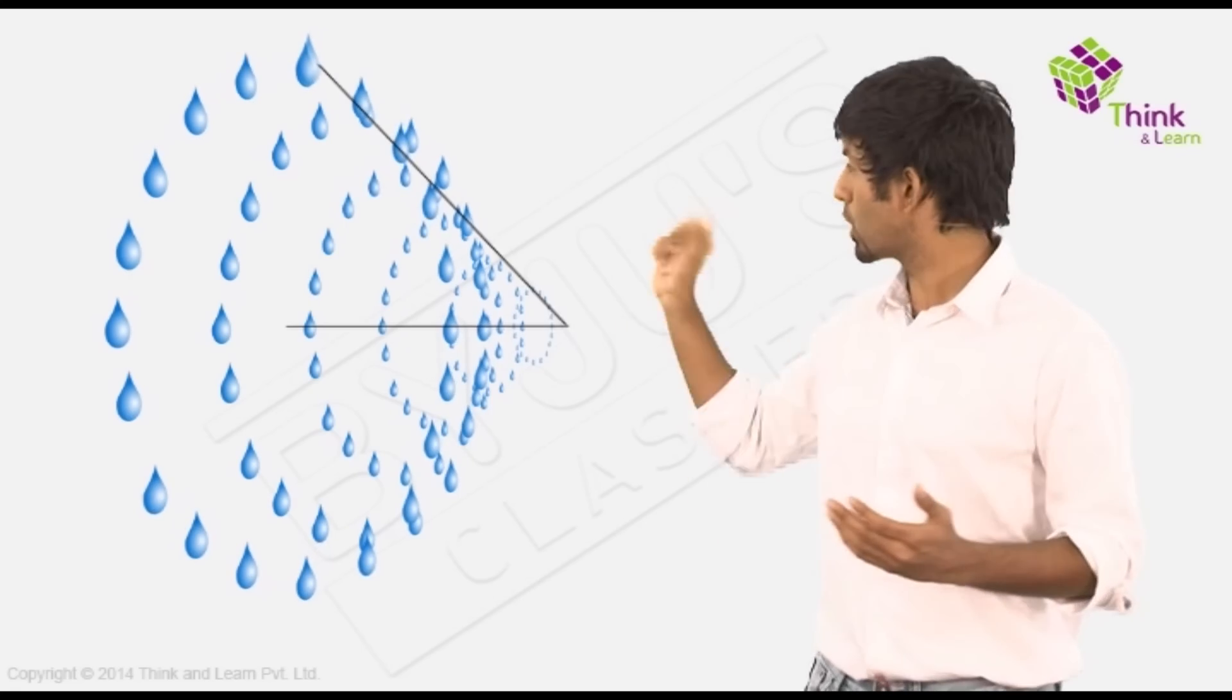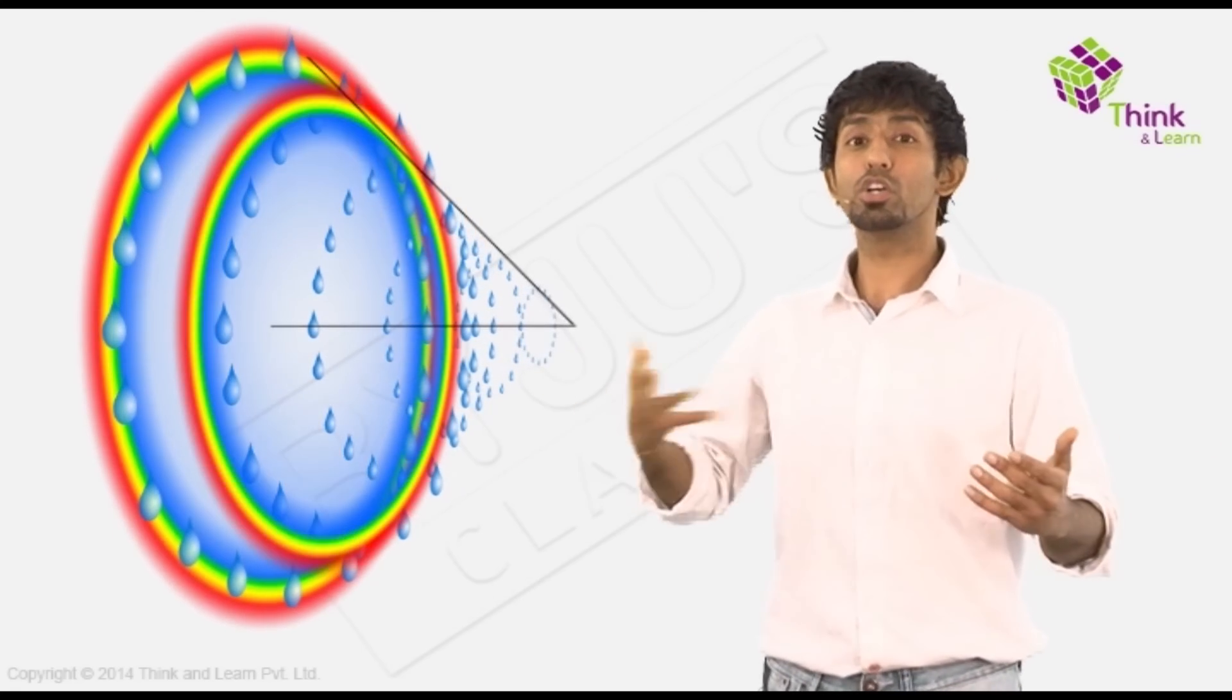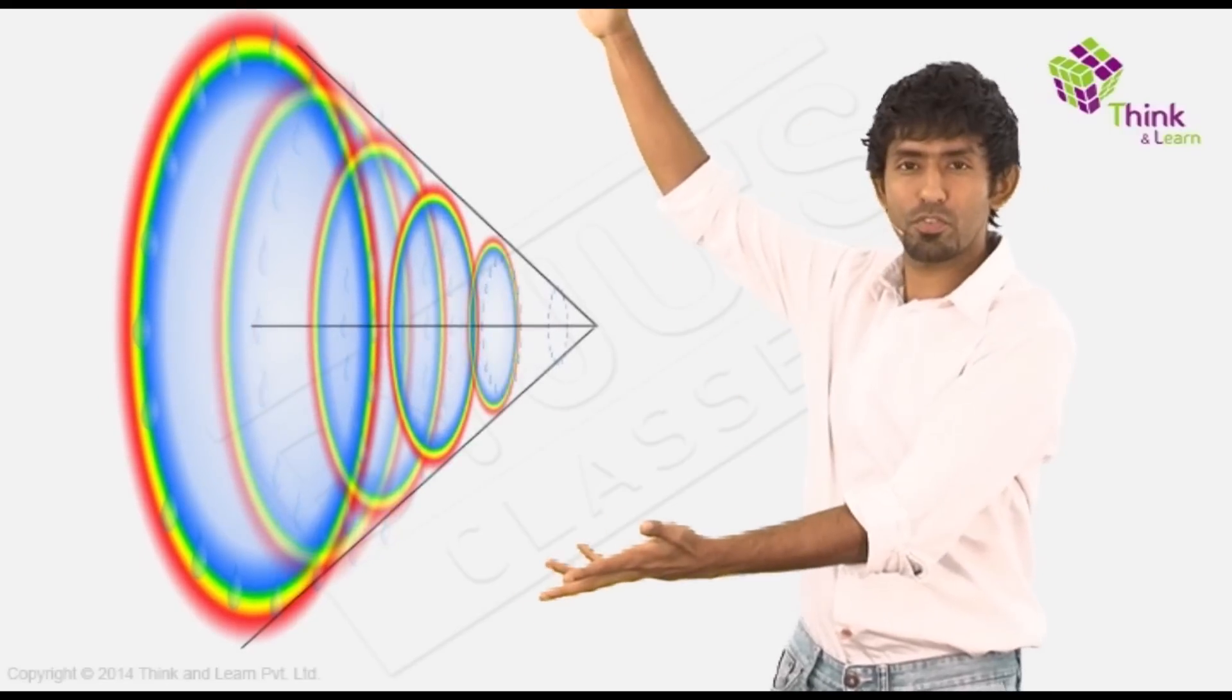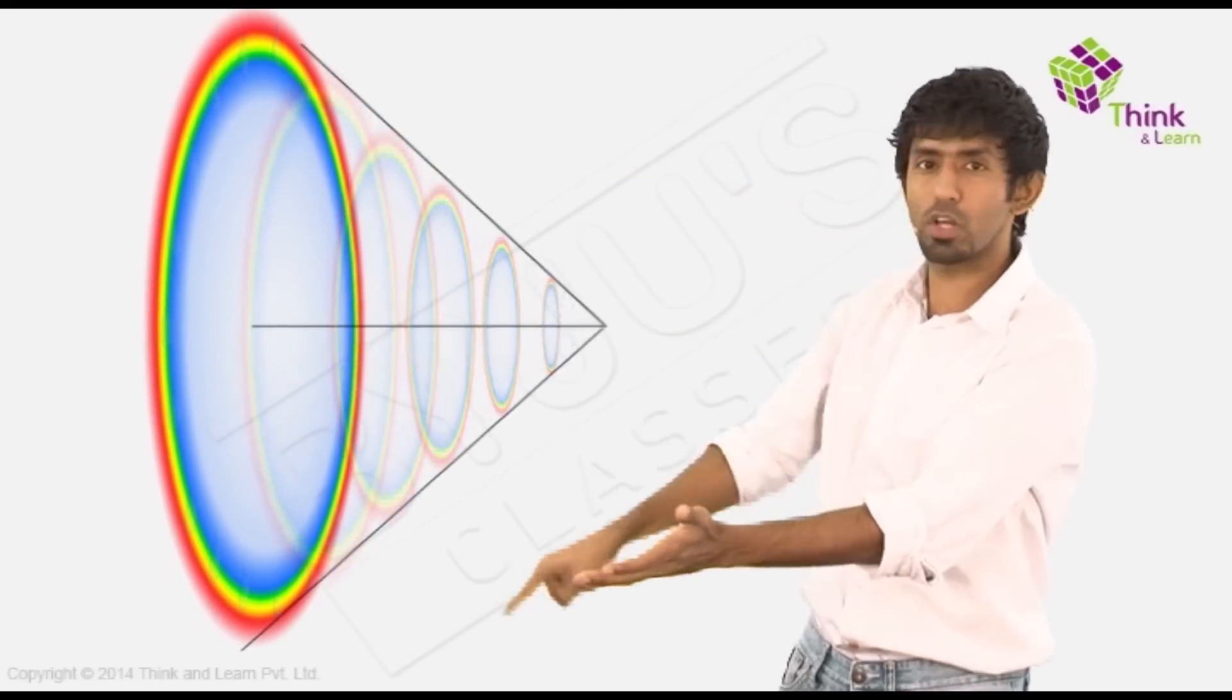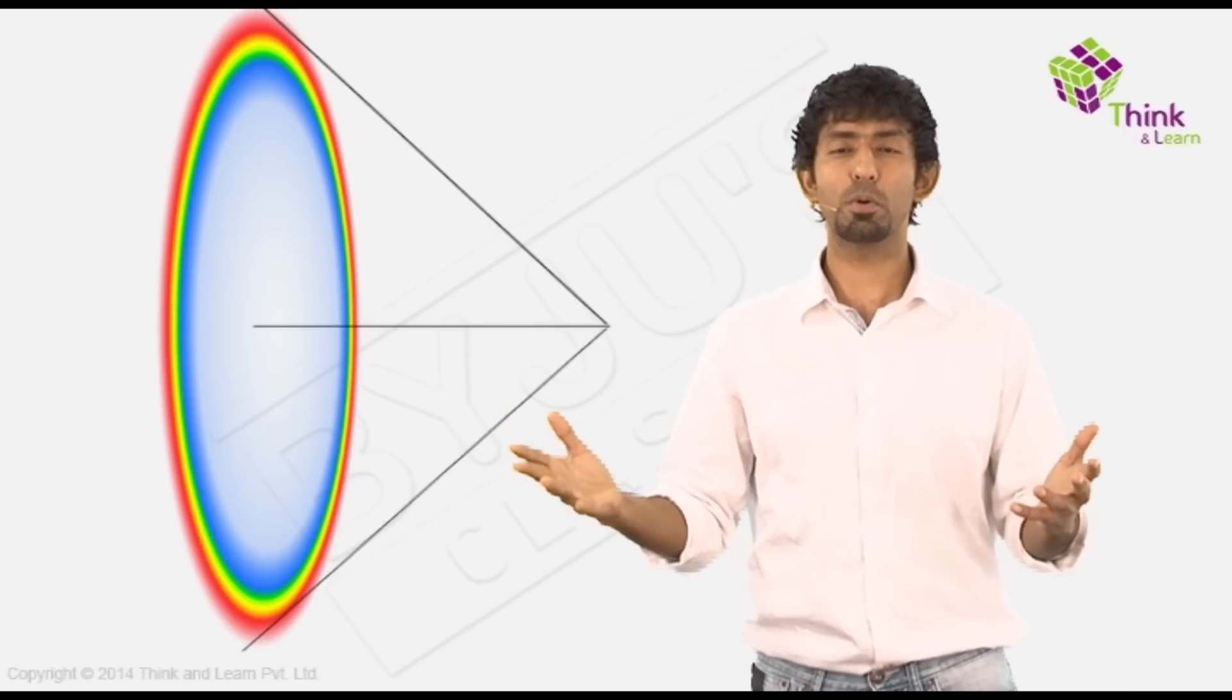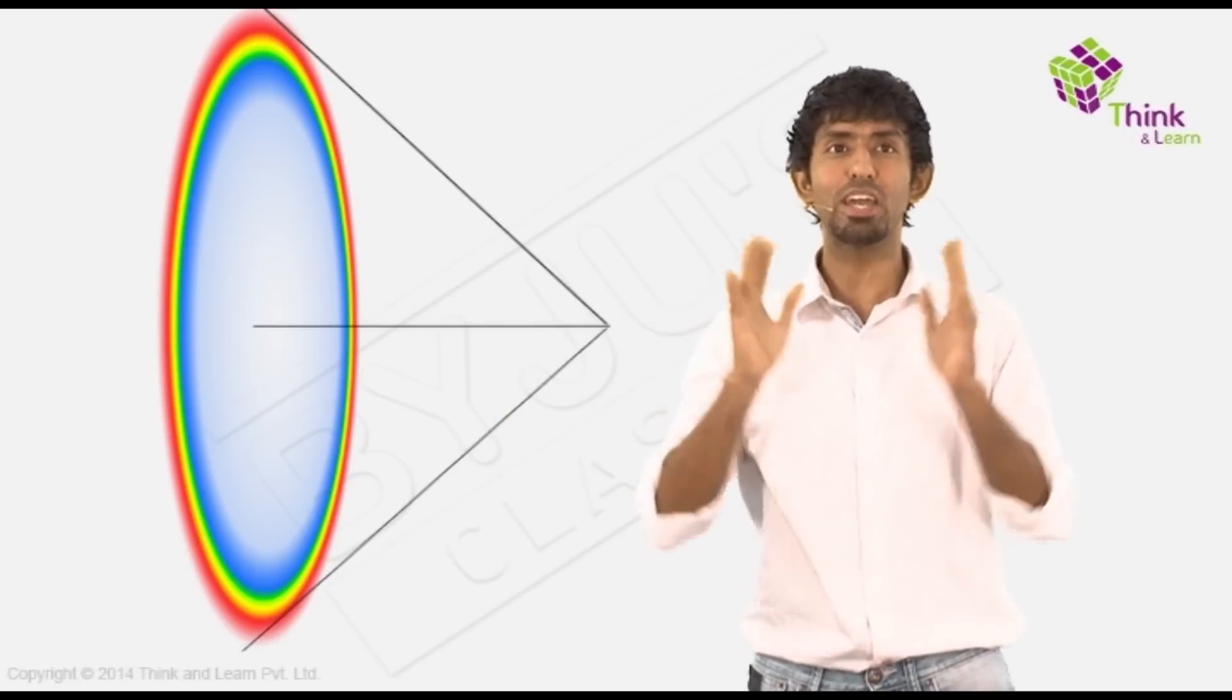So every raindrop along that cone has or contributes to a rainbow. So it is pretty much like this. If you are standing out there, a cone of raindrops away from you, each of those raindrops on that cone are creating a rainbow for you. Brilliant right? So where exactly is the rainbow? Is it far away? Is it close by? It is everywhere.